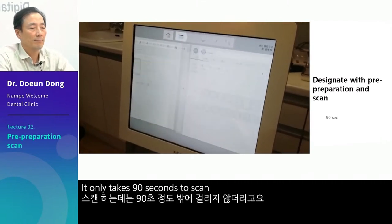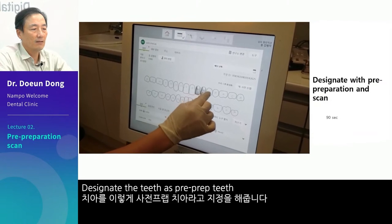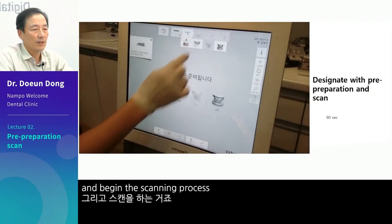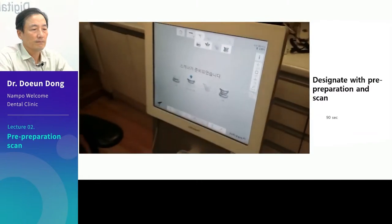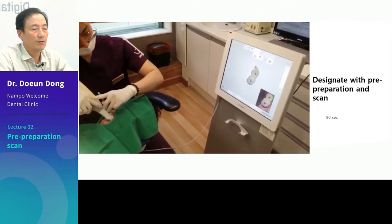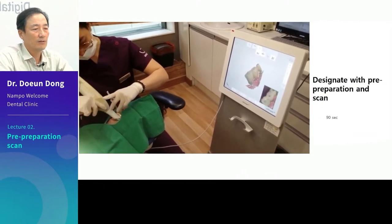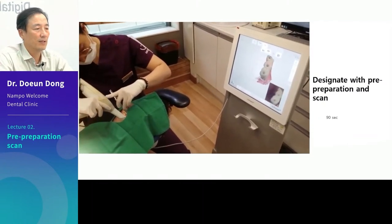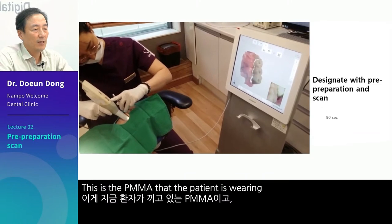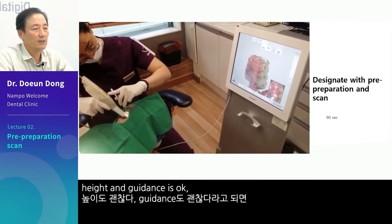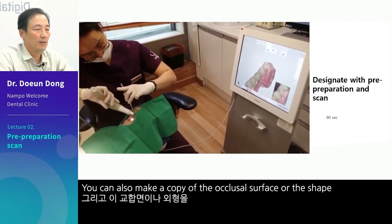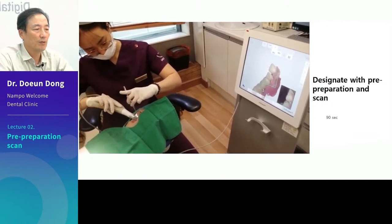It only takes 90 seconds to scan. Designate the teeth as pre-prep teeth and begin the scanning process. This is a faster way of merging compared to the merging process in the lab, and it is also technically convenient. This is the PMMA that the patient is wearing. If the patient thinks it is comfortable, height and guidance is okay, then you can scan it as is. You can make a copy of the occlusal surface or the shape into the final prosthesis.